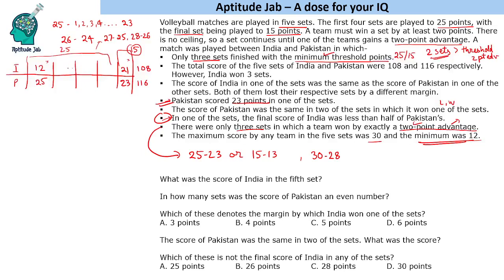India should then win the remaining three sets. If India's total is 108 and it already has 33 points from the lost sets, India needs 75 more points. Winning three sets at minimum gives 25+25+25 = 75, totalling 108. However, the condition says only three sets finished at minimum threshold, but in this scenario four sets finish at minimum threshold — so we eliminate this possibility.